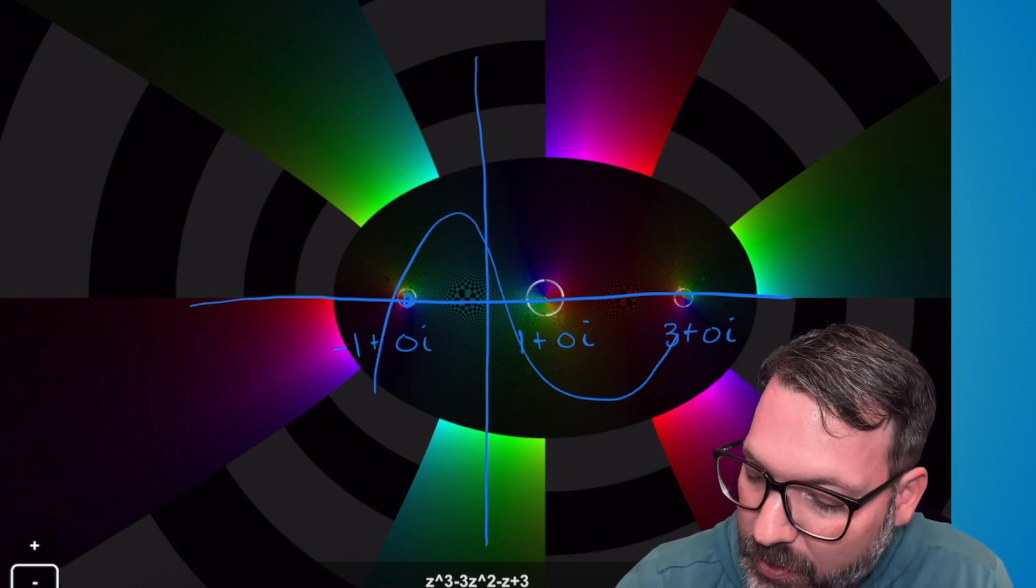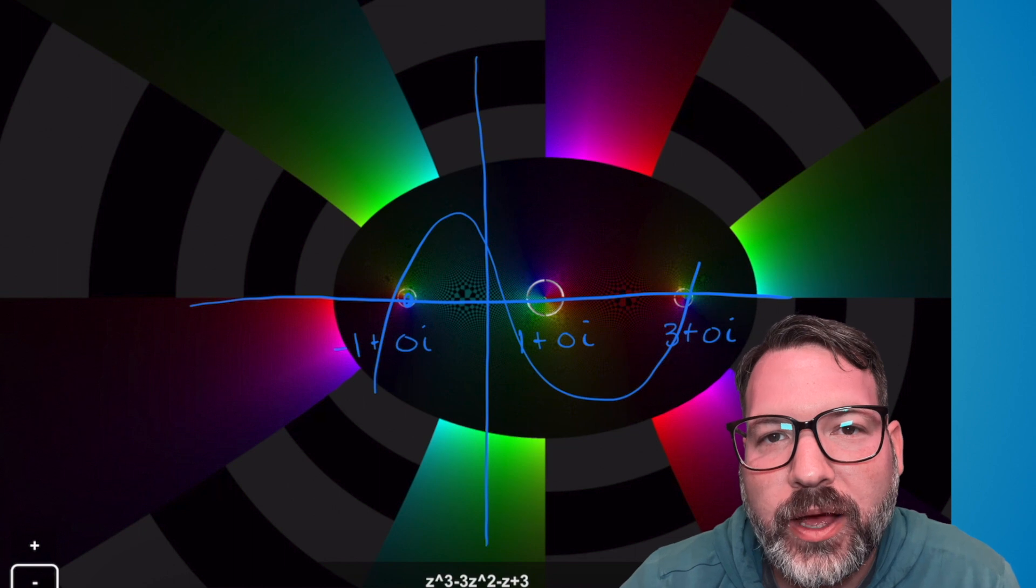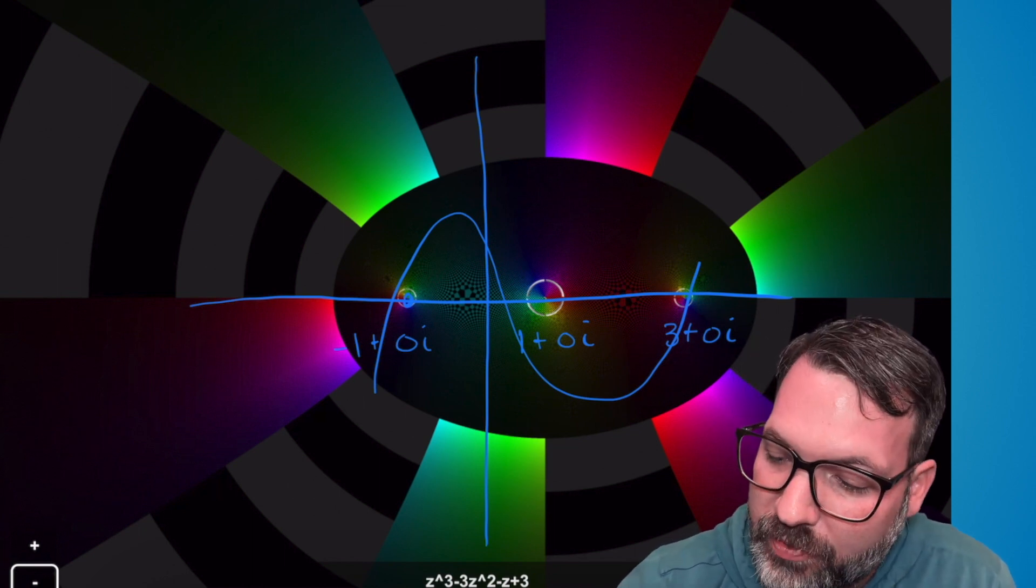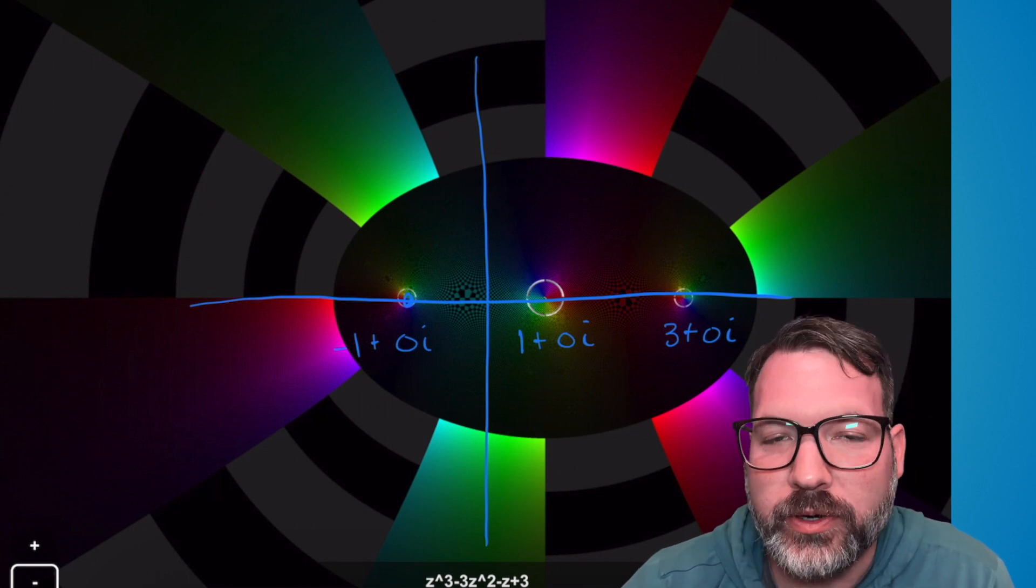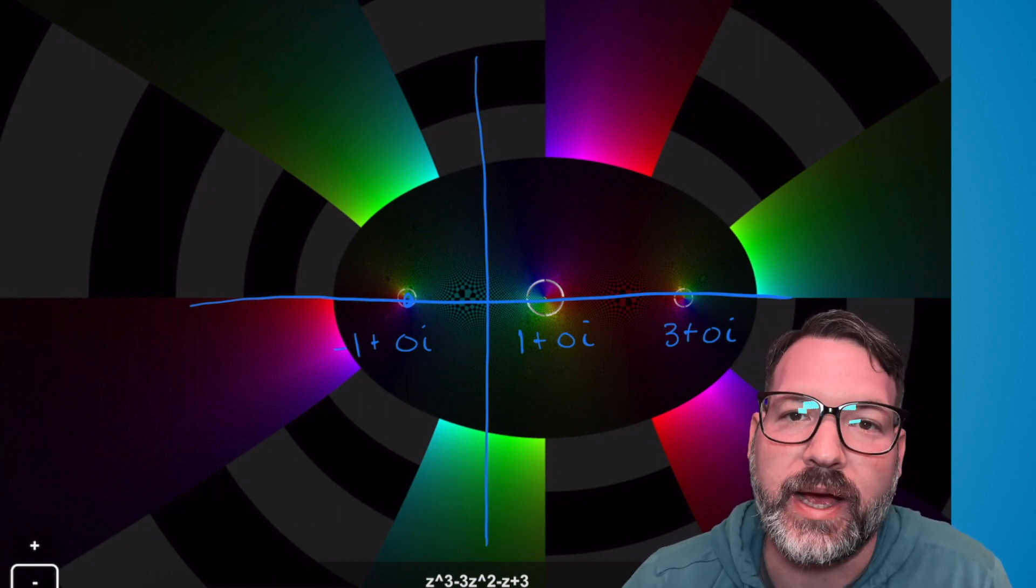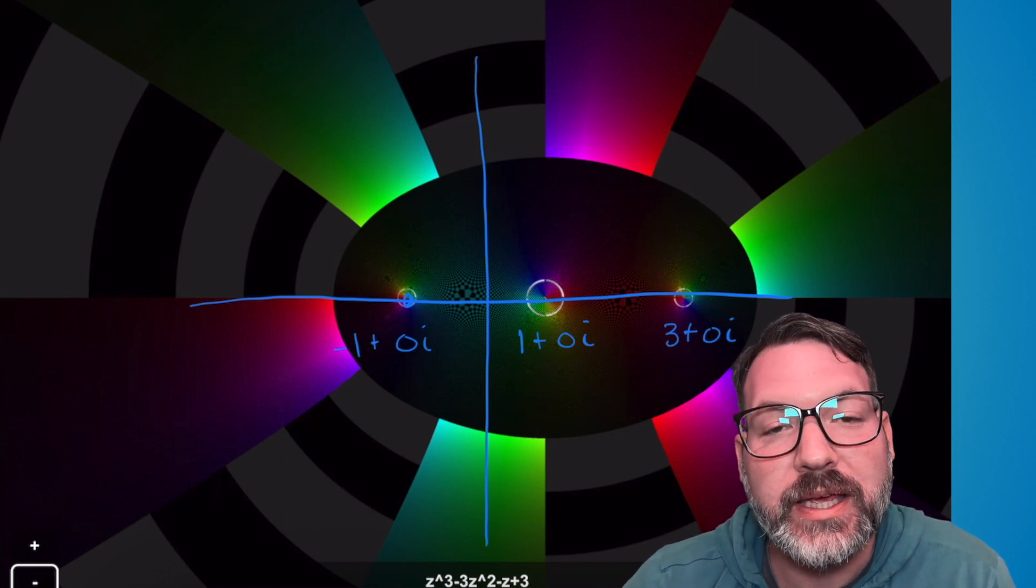But I can't graph this like we did before, because that up and down portion is not the result of the function, it's the imaginary part of the function. And so instead what we're doing here is we're coloring the complex plane in order to try to visualize the two-dimensional surface that is this polynomial.